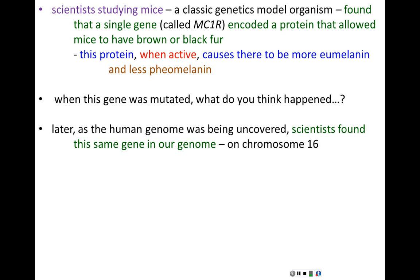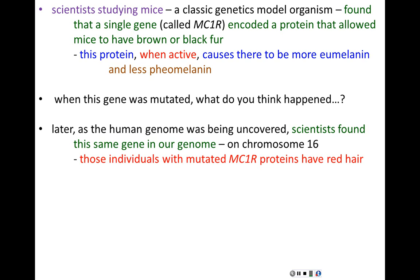Later, as the human genome was being uncovered, scientists found that we have a version of MC1R in our genome as well — it's on chromosome 16. Individuals with mutated MC1R proteins also can't make a lot of eumelanin, so they have more pheomelanin, and therefore they have red hair. Using a model organism like mice gave us information about our own genetic basis. So now we have some idea of the DNA basis: there's a gene for a protein, the protein makes eumelanin, when the gene is mutated you don't make the protein, and without the protein you can't make brown hair — leaving you with red hair.